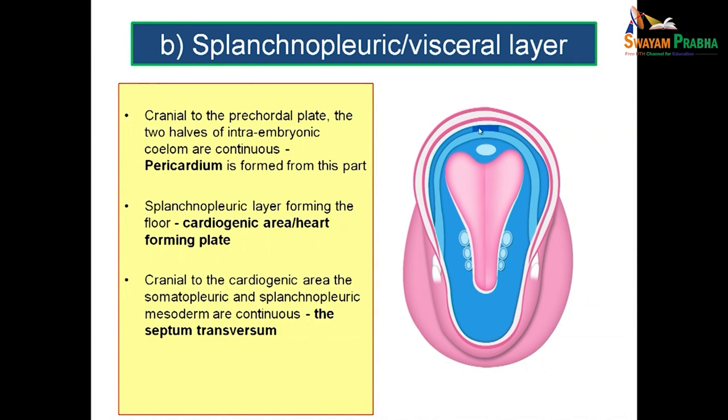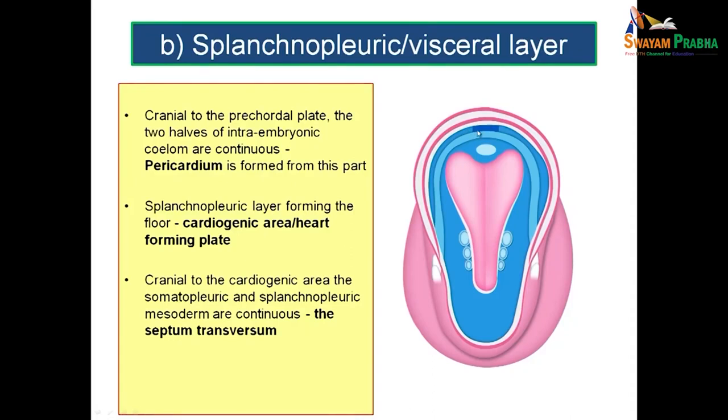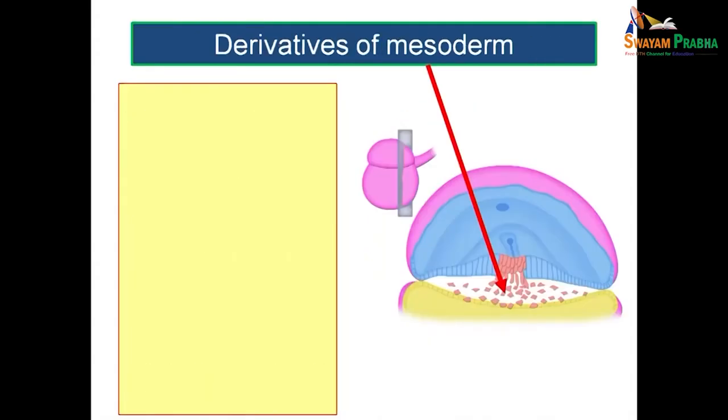Cranial to the cardiogenic area, the somatopleuric and splanchnopleuric layers become continuous, and this is how the septum transversum is formed. The septum transversum is the region where these two layers of mesoderm become continuous, and its fate is to make a major contribution to the formation of the diaphragm.